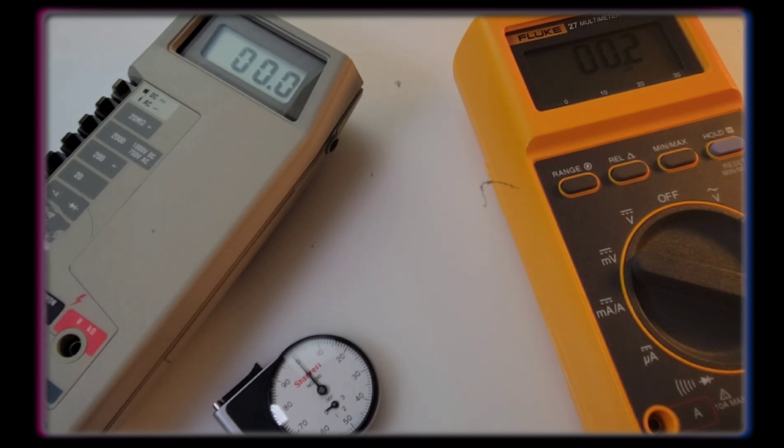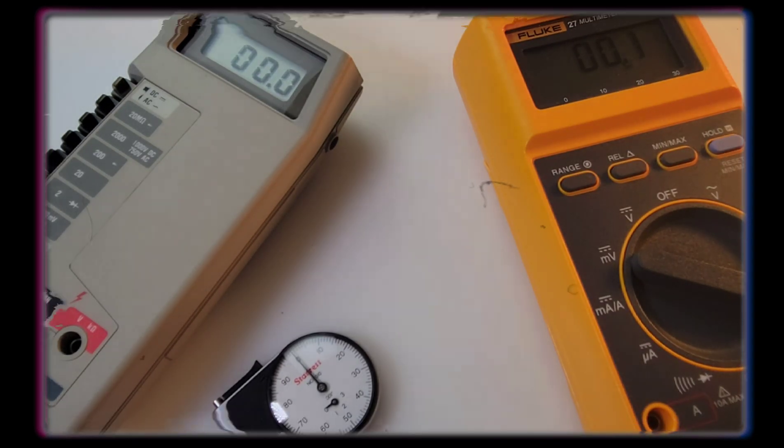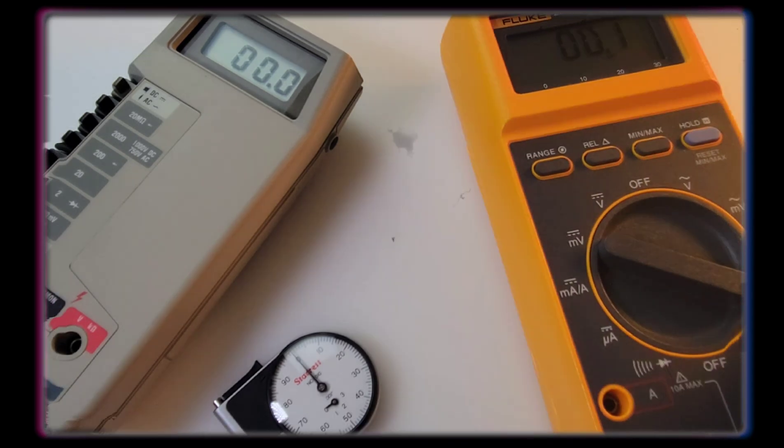The original Fluke 27 came out way back in 1986, almost 40 years ago. This version is a newer upgraded one and it's only 20 years old. Only.